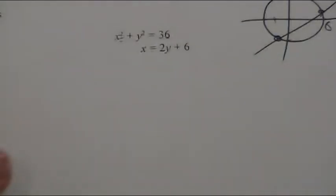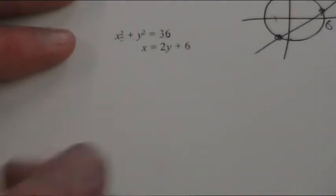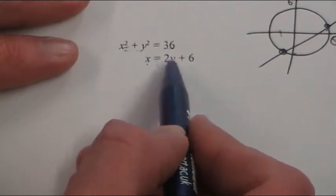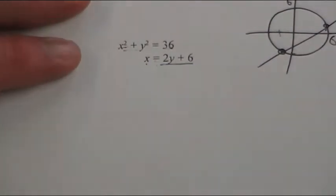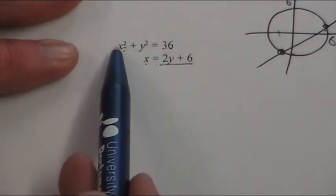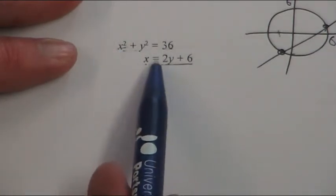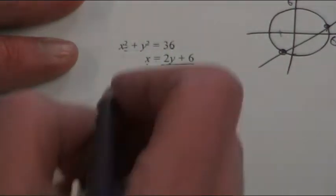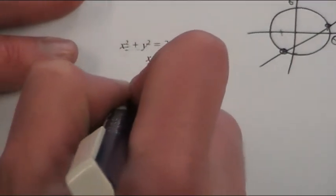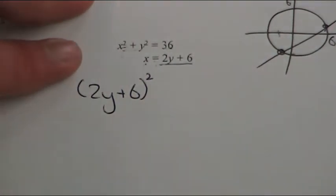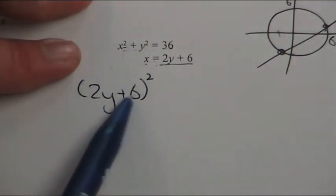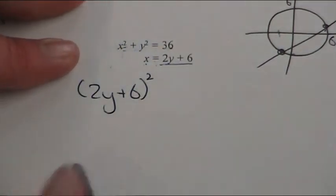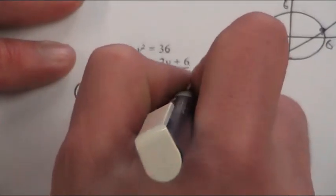So, to do this, they've quite nicely given me the fact that x is exactly the same as this. So, where I have an x written here, I can in fact not write an x, because I know it's the same as this. So, every time in the top line I see an x, I'm going to swap it for this. So, x squared is actually this squared, because they're the same. So, plus y squared equals 36.